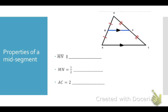Let's use some of these properties. Here I have triangle ABC with M and N as midpoints, so that makes line segment MN a mid-segment. Since it's a mid-segment, MN is parallel to the third side AC. I also know the length of MN is exactly one half the length of AC, and that AC has to be twice the length of MN.